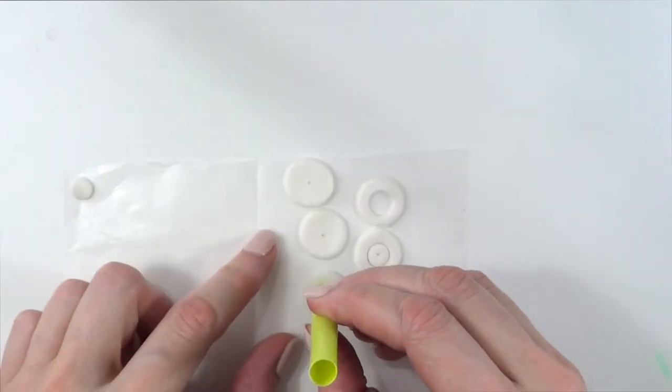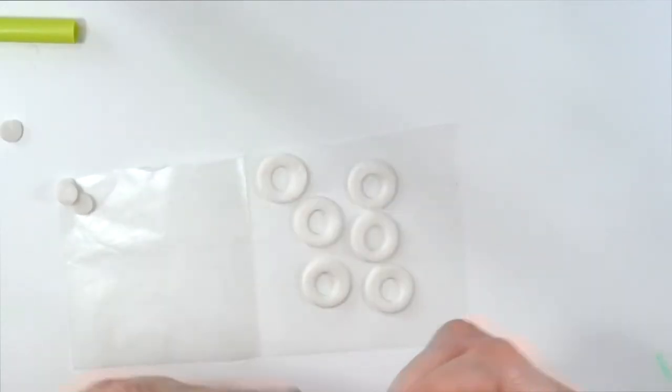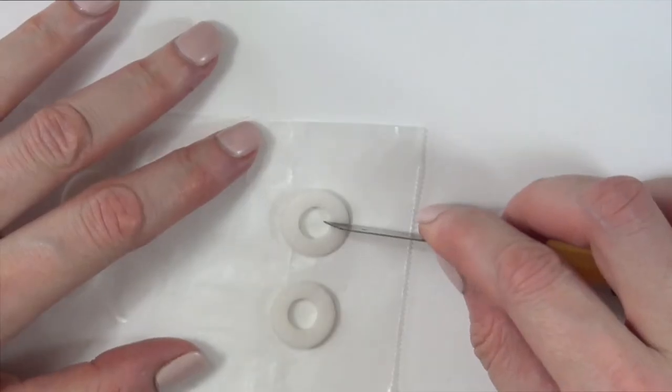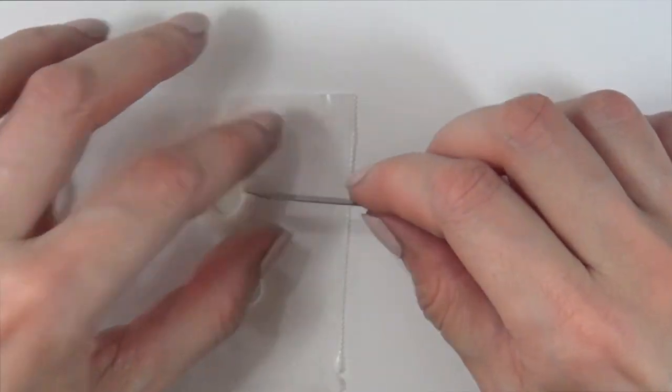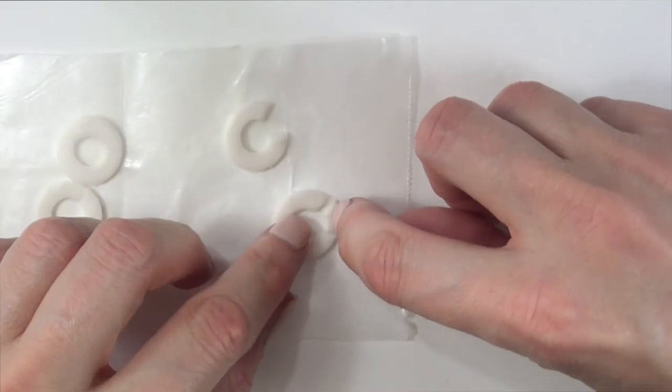Now when I say donuts, I don't really mean donuts with sprinkles and all that stuff. This is just inspired by the shape of a donut. For my earrings, I'm going to be taking my cutter and I'm just going to cut two slits in there. This is how you actually put the earring on.